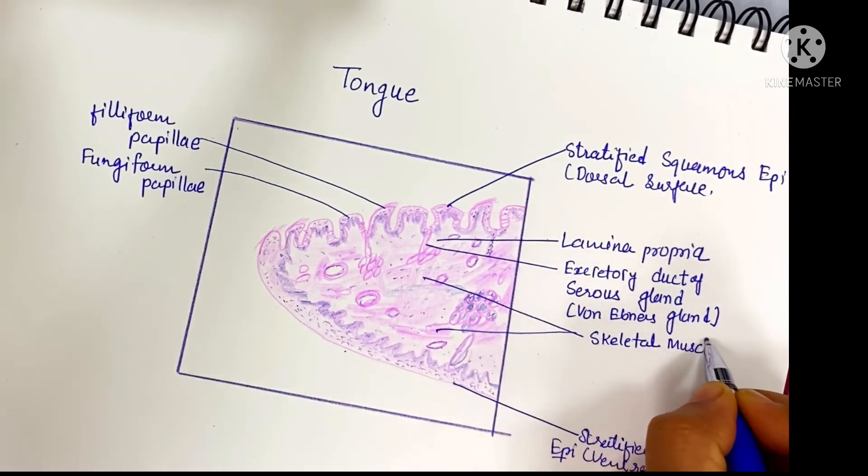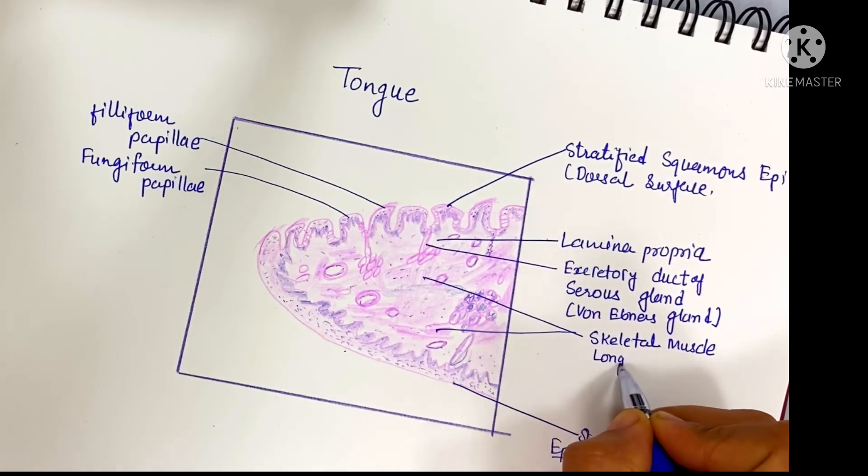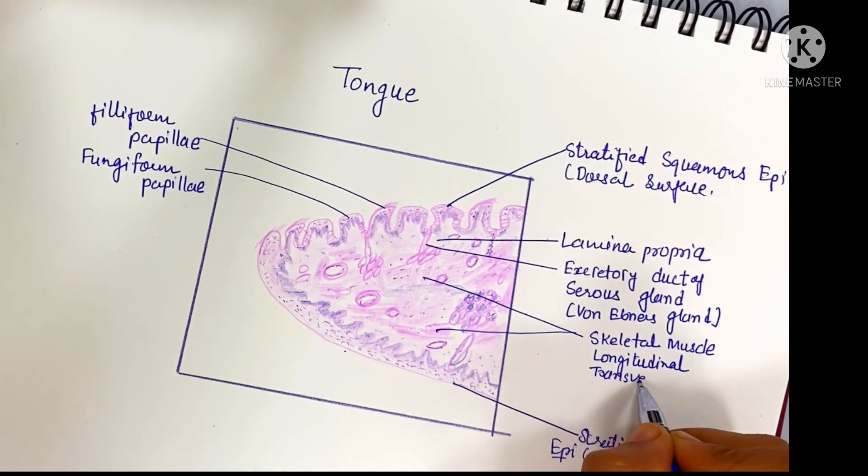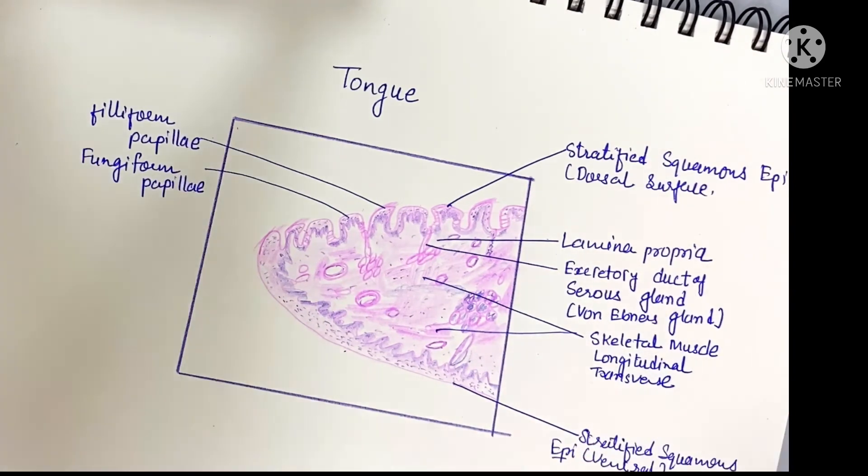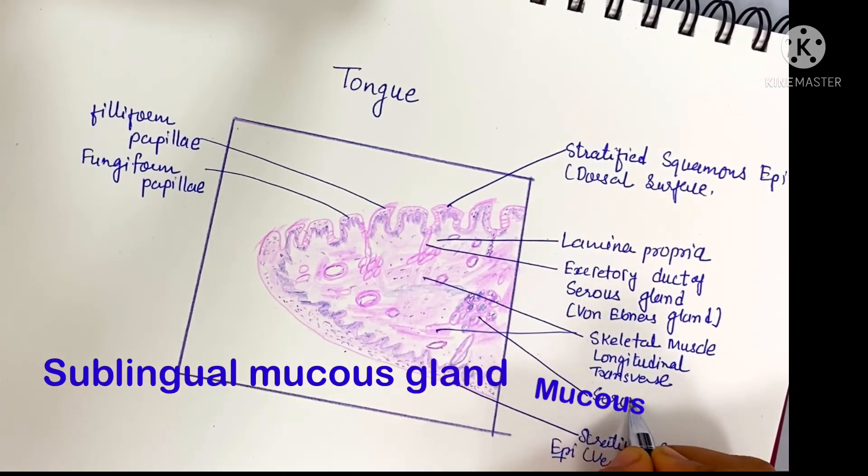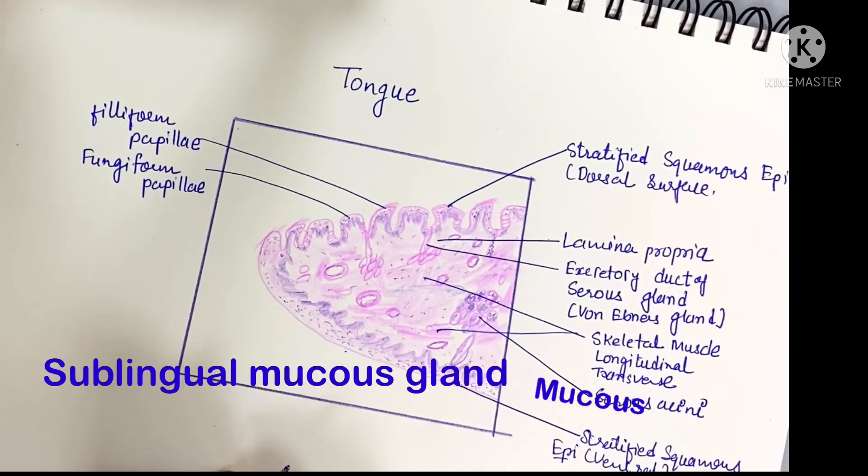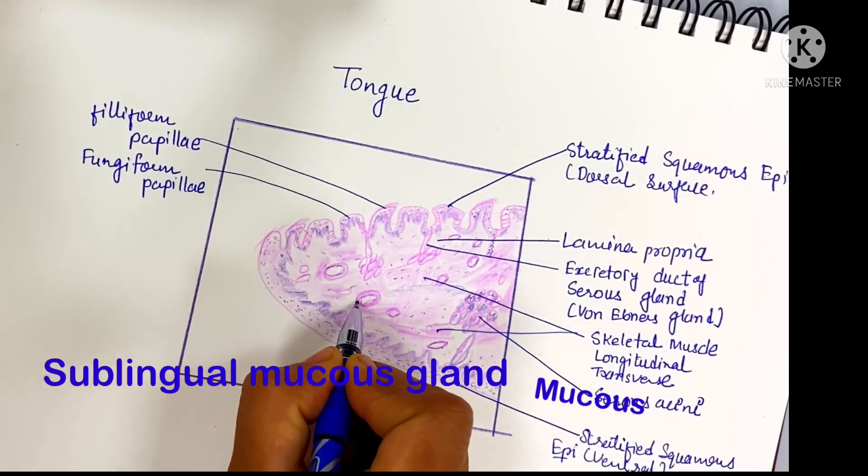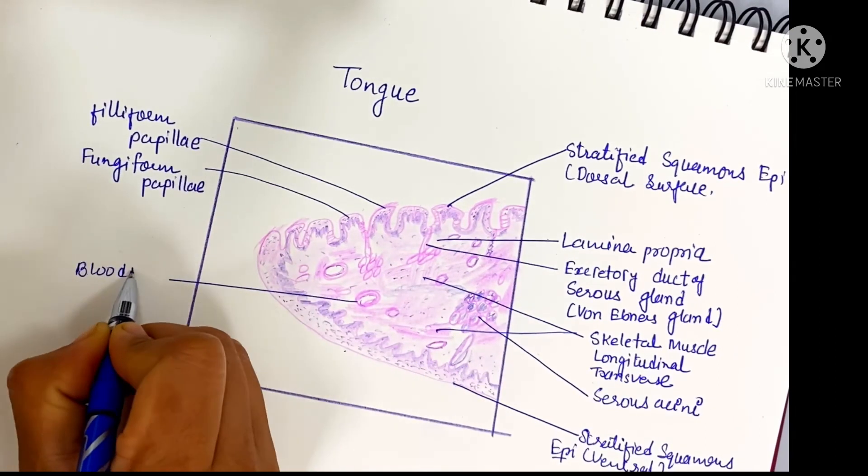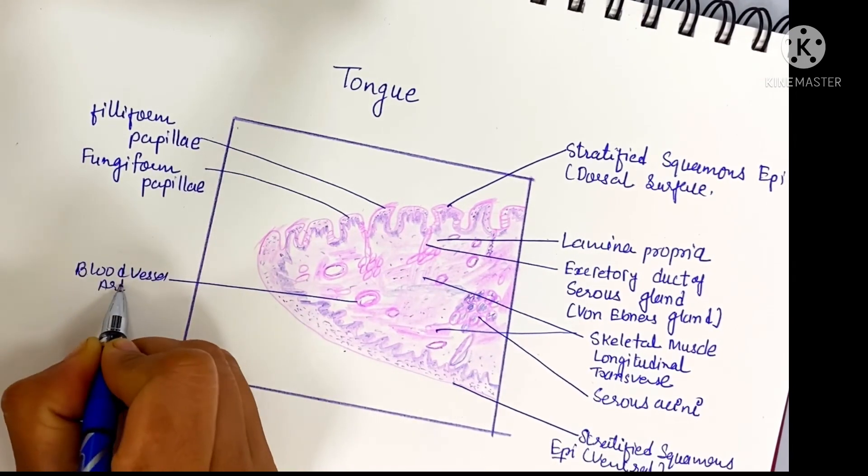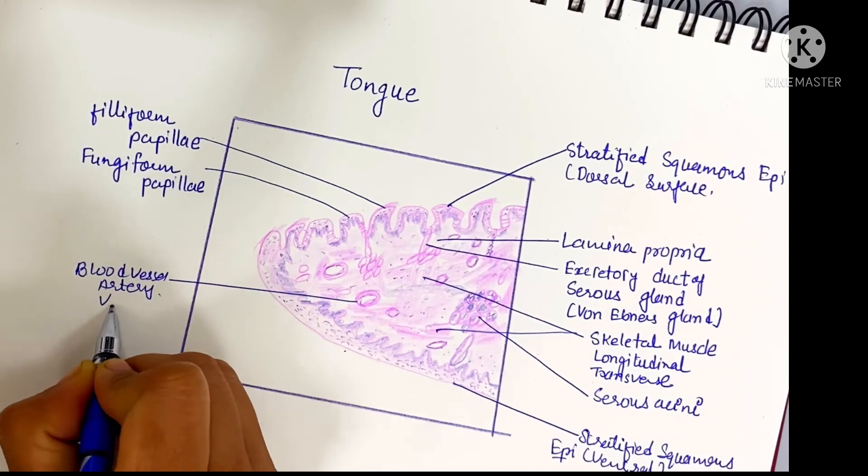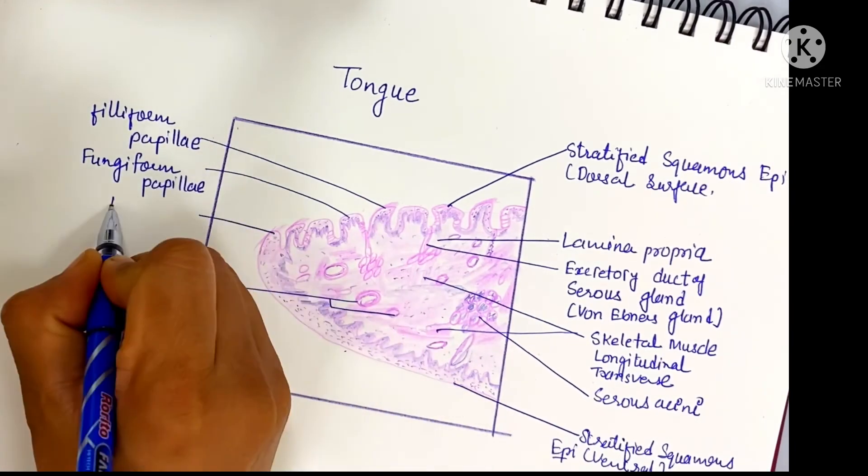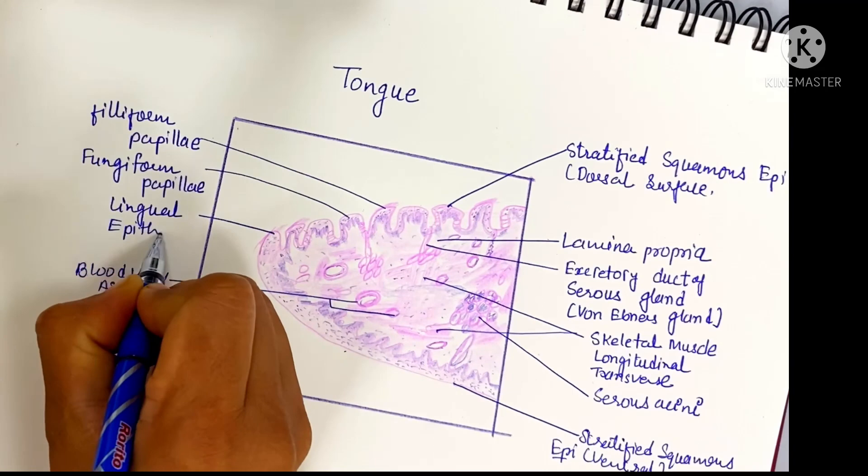Skeletal muscle is arranged in longitudinal, transverse, and oblique directions. Mucus acini, sublingual mucus glands, blood vessels (artery and vein), nerves, lymphatics, and adipose tissue are present.